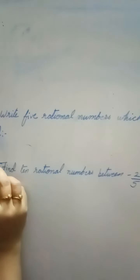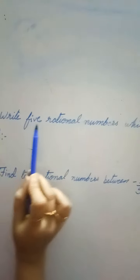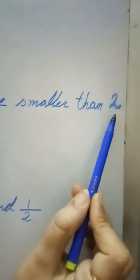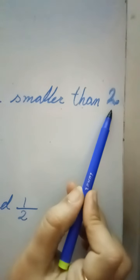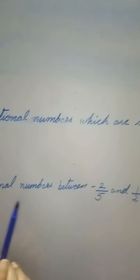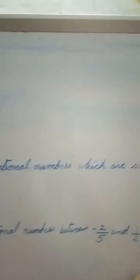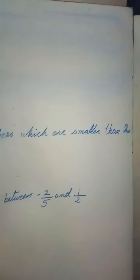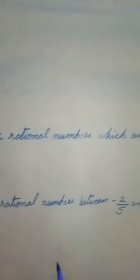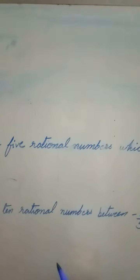Okay students, our third question is: write 5 rational numbers which are smaller than 2. They are asking for 5 rational numbers smaller than 2, but if you think smartly, there are infinite numbers which can be smaller than 2. So we will solve it logically — that will make your work easy. Always try to use logic.